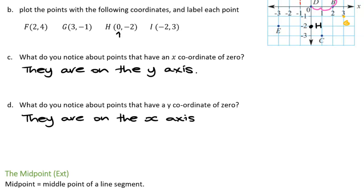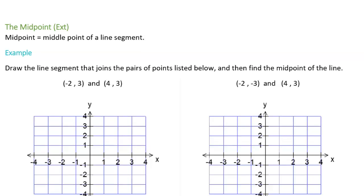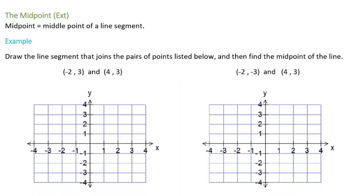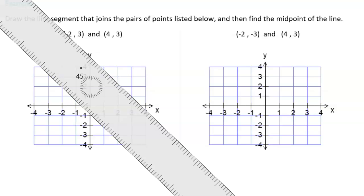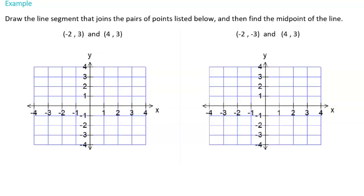Now that we've got some points under our belt, we're going to look at something called the midpoint — the middle point of a line segment. A line segment is just a line that goes from one point to another. We'll draw line segments joining pairs of points and find their midpoints. It's really important when graphing to use a pencil, and when drawing lines we'll need a ruler.